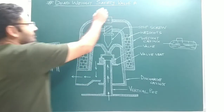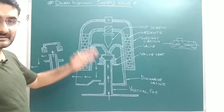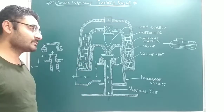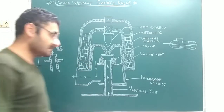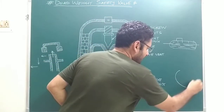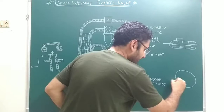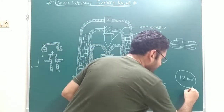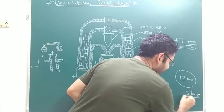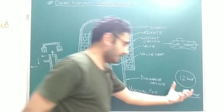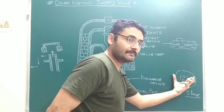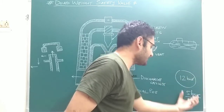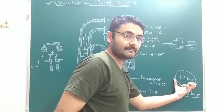The next important point is that this dead weight safety valve will provide safety to the boiler. The question may arise: how does this valve provide safety? Suppose inside the boiler the pressure is 12 bar, but the boiler is designed for a working pressure of 5 bar. That means the pressure inside the boiler exceeds the working pressure.